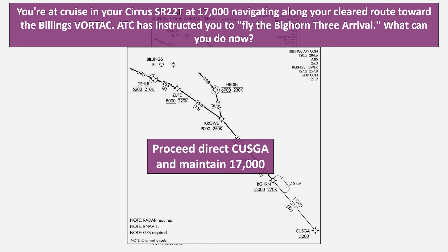There are two ways ATC will authorize you to fly an arrival. The first way is you'll either be cleared for the arrival, or in some cases told to fly the arrival, which allows you to follow the lateral guidance from each point — so we could fly first to Kuzga, then Bighorn, then Little, and so on. We cannot, however, leave our previously assigned altitude. To do that, we need to hear "descend via the arrival." At that point, we can both follow the lateral course of the procedure and hit the altitude restrictions, such as at or above 15,000 at Kuzga and Bighorn.